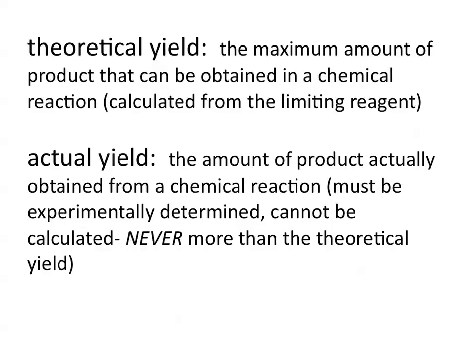The actual yield is the amount of product that is actually obtained from a chemical reaction. And so the actual yield is the amount of product you would actually obtain if you did this experiment in a lab.